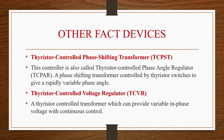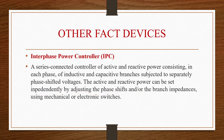Now let us see other FACTS devices. First is the thyristor-controlled phase shifting transformer, TCPST, also called a thyristor-controlled phase angle regulator — a phase shifting transformer controlled by thyristor switches to provide a rapidly variable phase angle. Next is the thyristor-controlled voltage regulator, TCVR — a thyristor-controlled transformer which can provide variable in-phase voltage with continuous control. Next is the interphase power controller, IPC — a series-connected controller of active and reactive power consisting in each phase of inductive and capacitive branches subjected to separately phase-shifted voltages. Active and reactive power can be set independently by adjusting the phase shifts or balance impedances using mechanical or electronic switches.